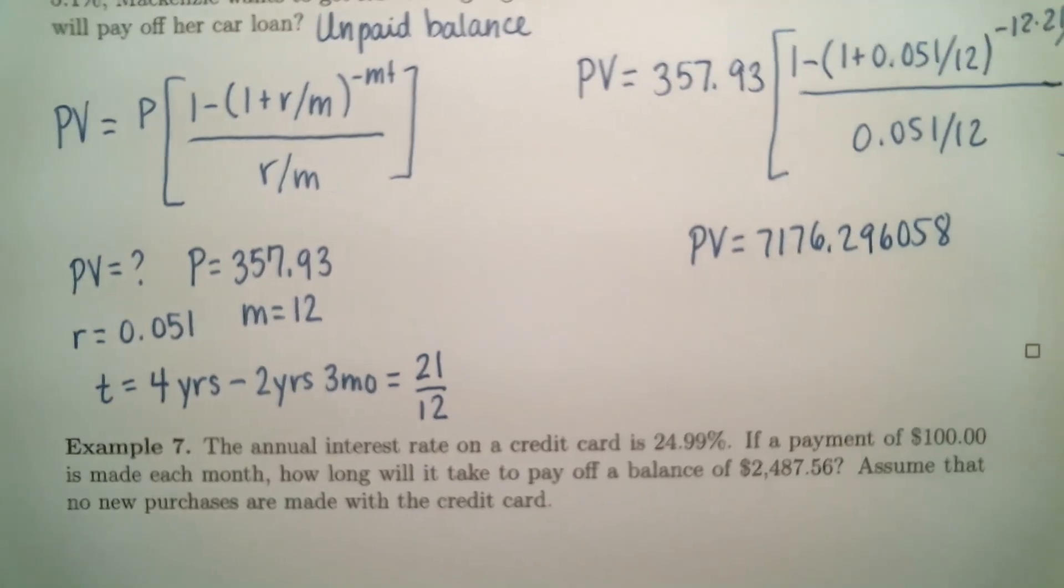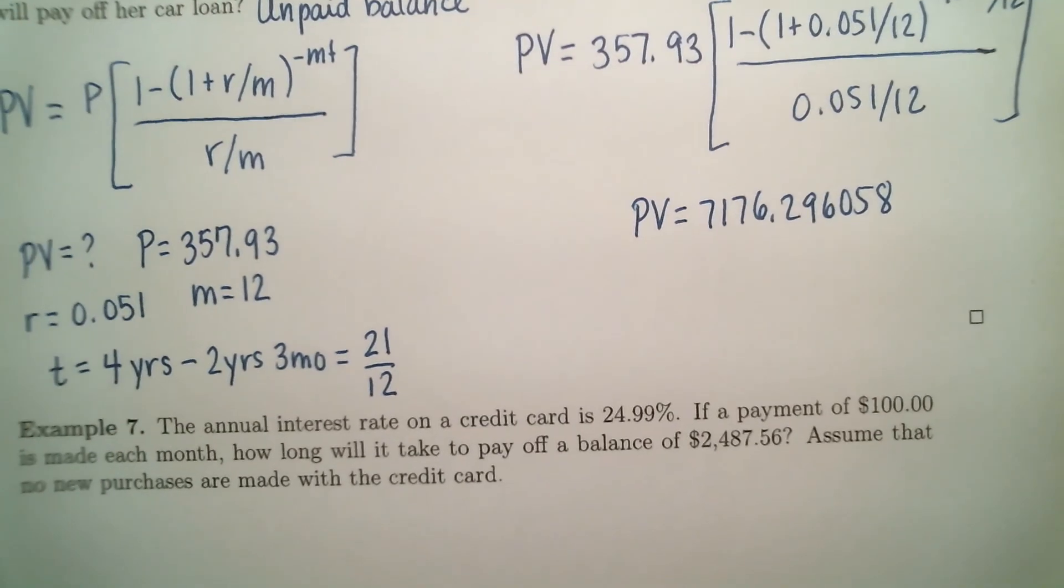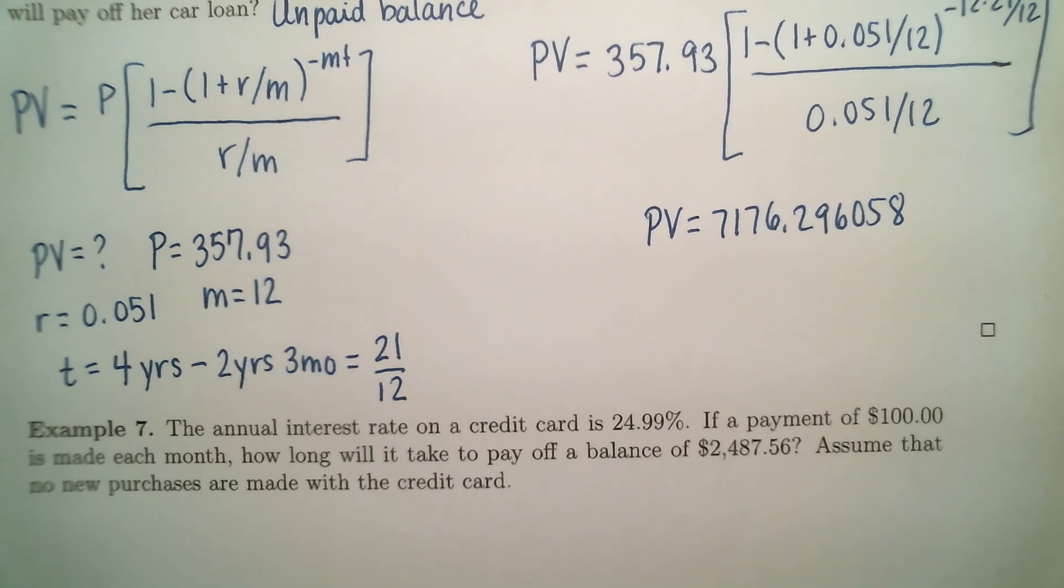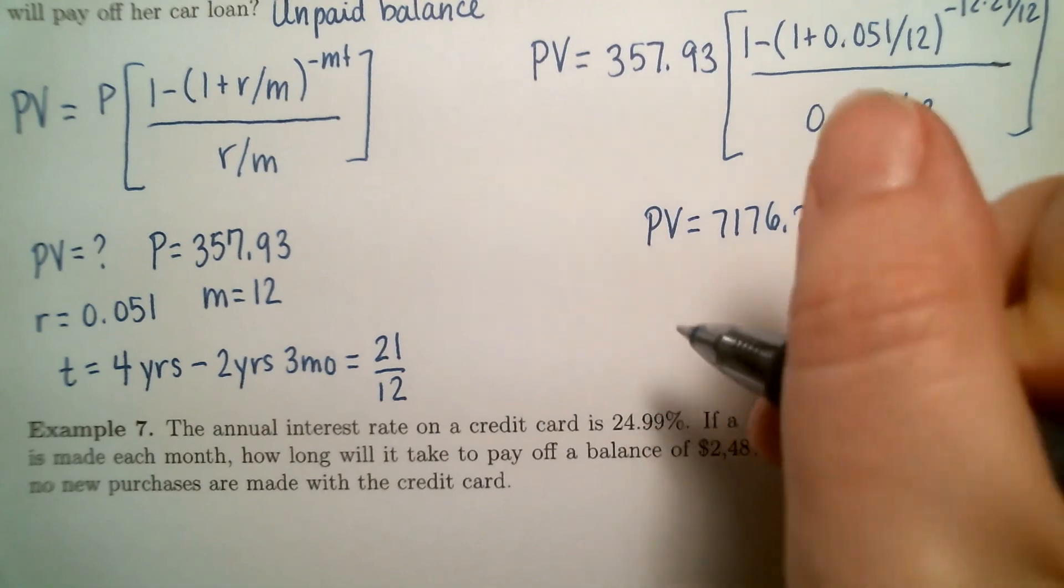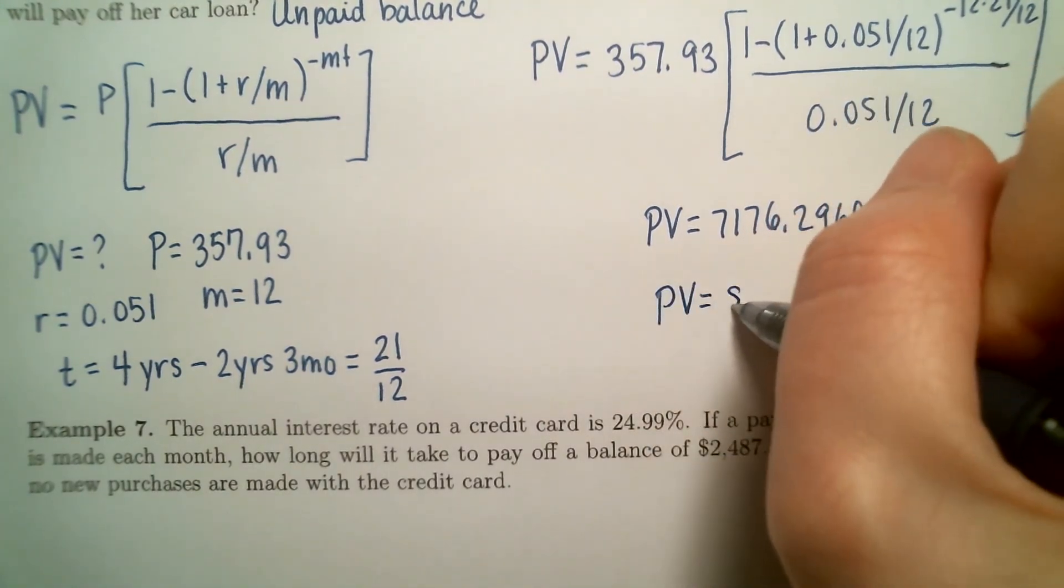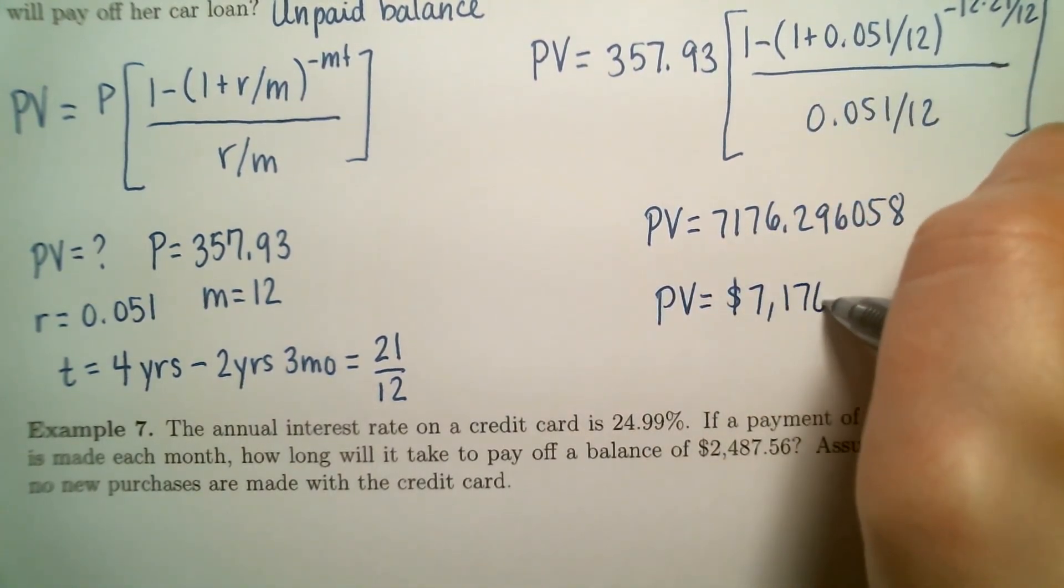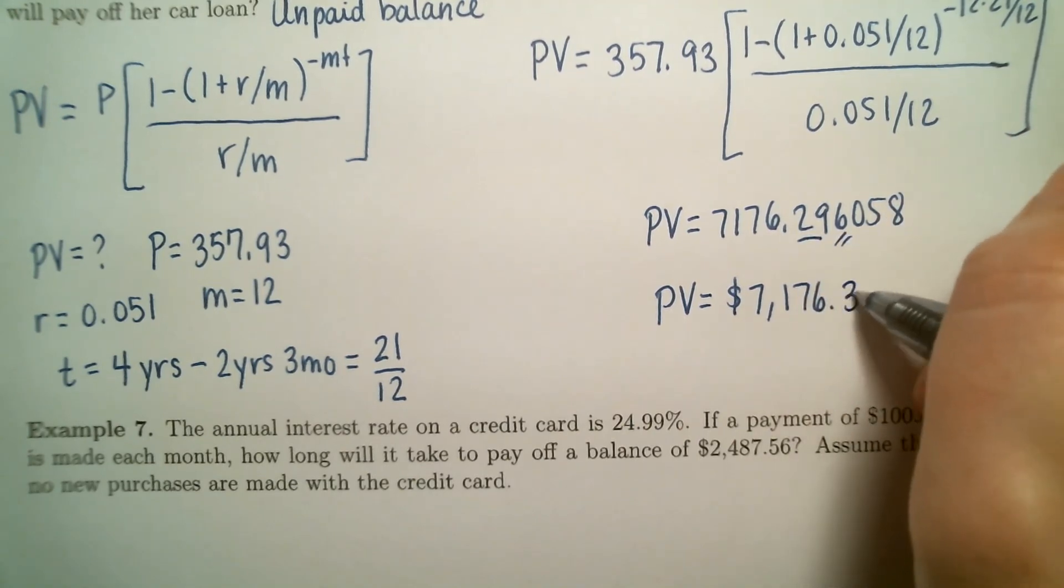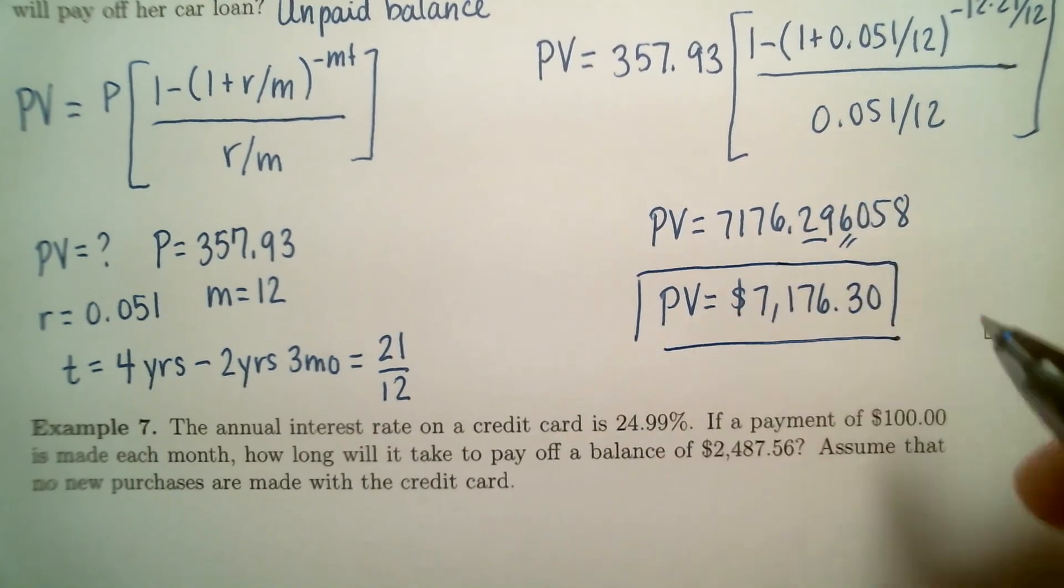This is telling us that in order to pay off her gas guzzler car, McKenzie is going to have to pay $7,176. And if we round, we're going to round up. So 30 cents.